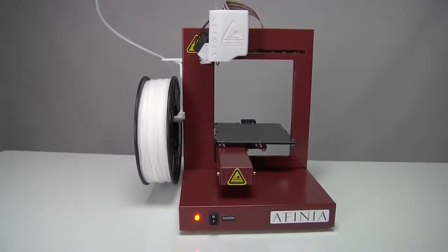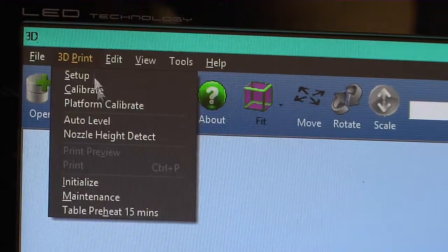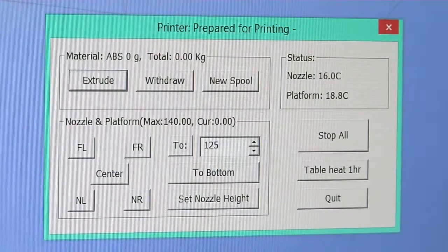After the printer has initialized, select maintenance from the 3D print menu. Click the extrude button.